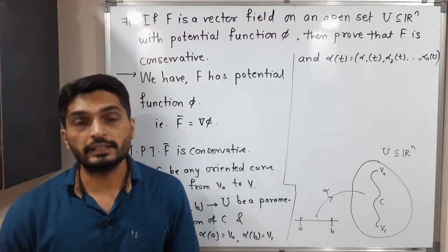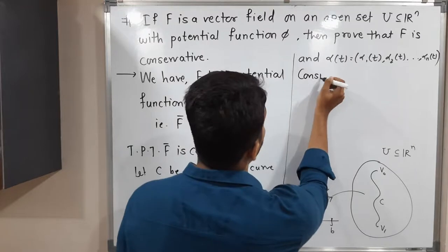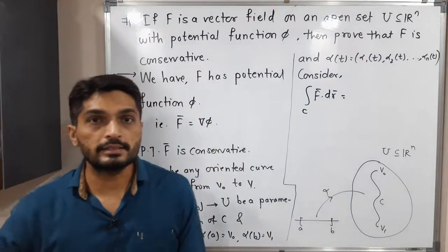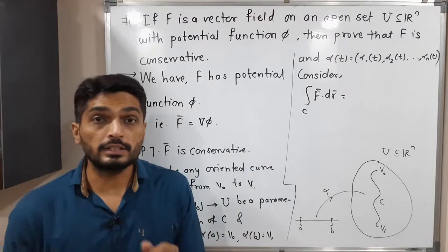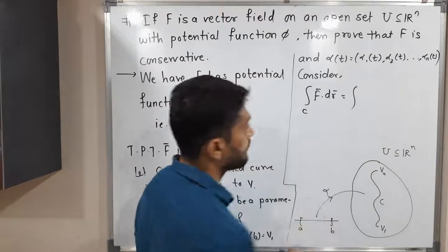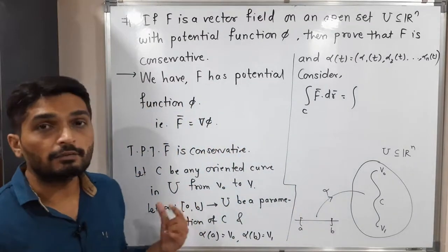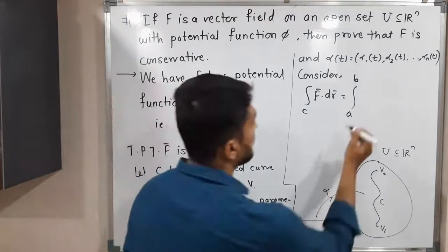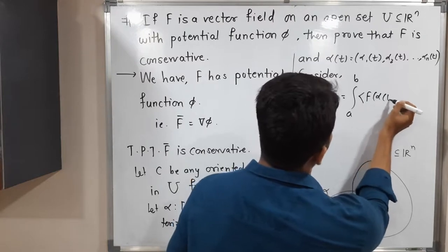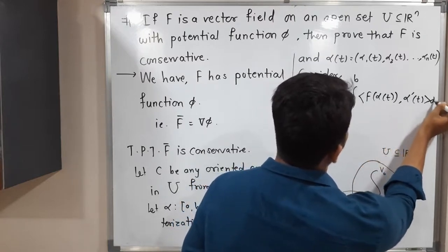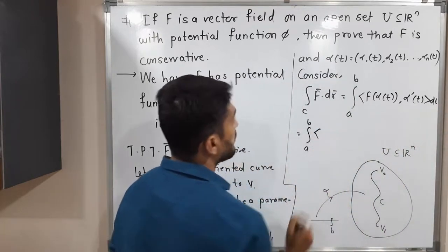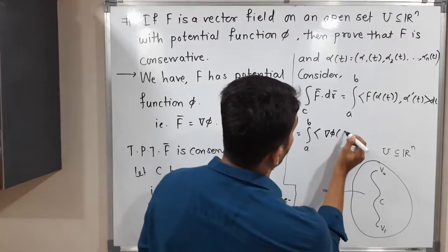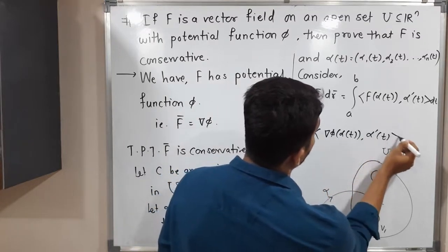Let us calculate the line integral of f over C. Consider the integral of f-bar dot dr-bar over C. Since C has parameterization alpha defined on [a, b], the line integral becomes the integral from a to b of the inner product of f(alpha(t)) and alpha'(t) dt. Since f-bar equals del phi, we substitute to get the integral from a to b of the inner product of del phi(alpha(t)) and alpha'(t) dt.